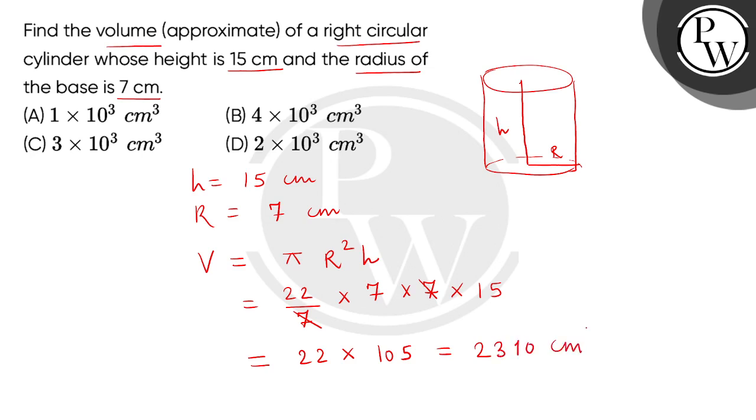But क्योंकि हमें यहां पर approximation करना है तो हम दिये हुए answers में से choose कर सकते हैं option number D, because this is similar to 2,000 cm³. So यह approximation हो गया. So final correct answer is option number D. Thank you.